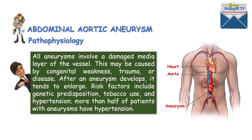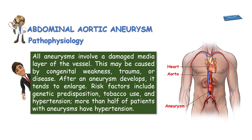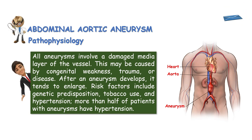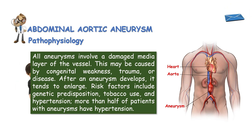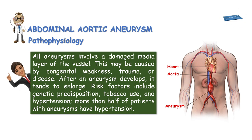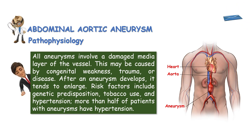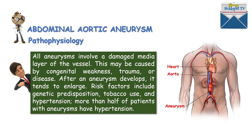Abdominal aortic aneurysm pathophysiology: all aneurysms involve a damaged media layer of the vessel. This may be caused by congenital weakness, trauma, or disease. After an aneurysm develops, it tends to enlarge. Risk factors include genetic predisposition, tobacco use, and hypertension. More than half of patients with aneurysms have hypertension. Modifiable risk factors include tobacco use — you can always quit to lessen the risk. Hypertension can be prevented by lifestyle changes.